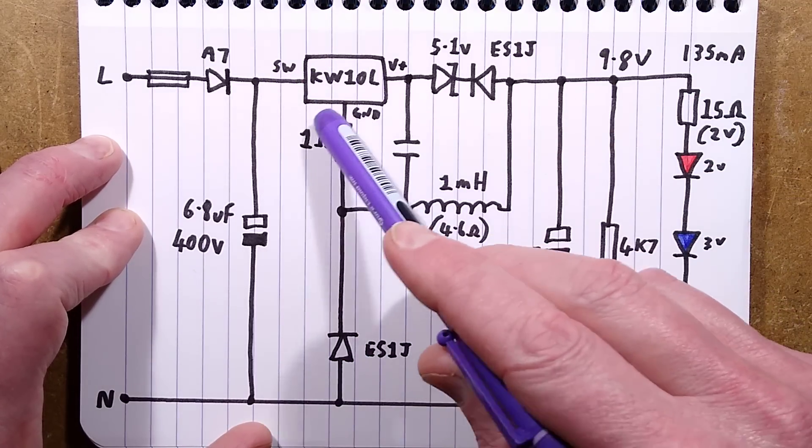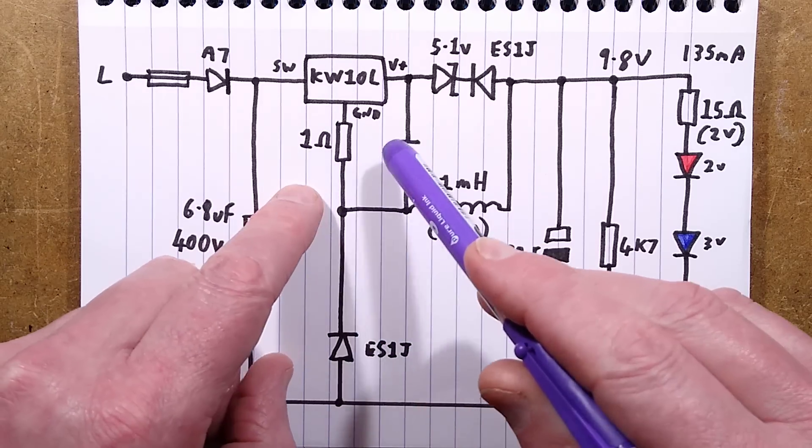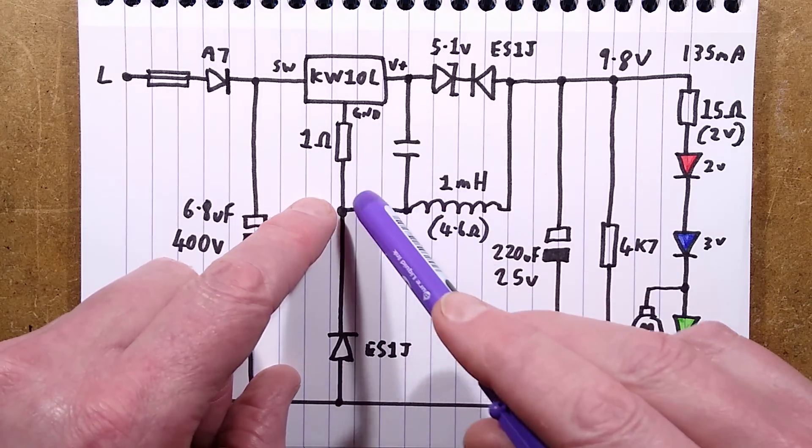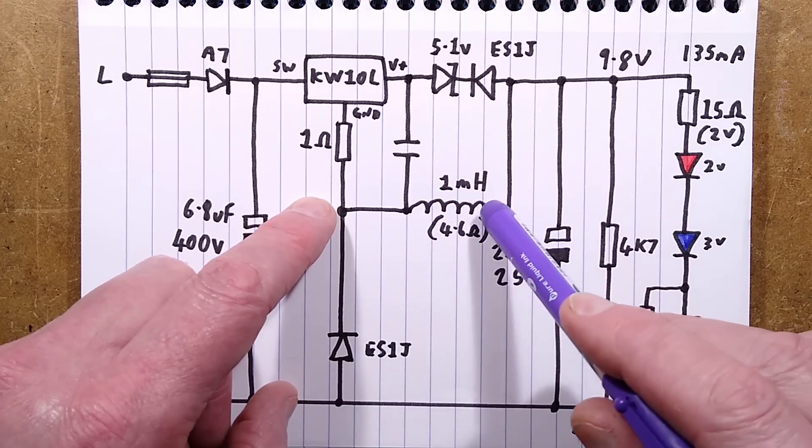The chip, the one thing they seem to have added, not sure if this is standard, they've added a one ohm resistor there. But this chip will basically pulse this inductor and it's got current sensing built into it, and it pulses the inductor and when it does so it charges up this capacitor.